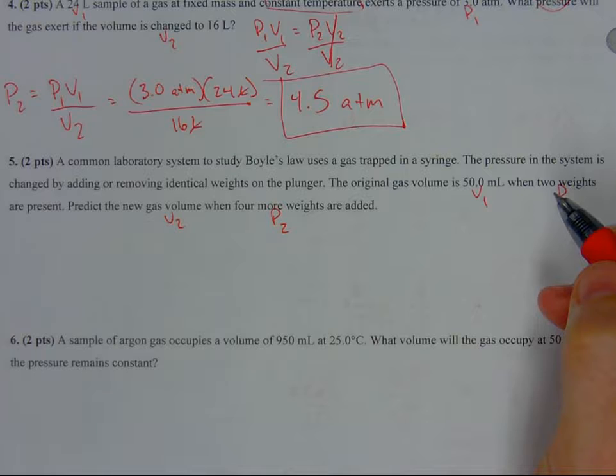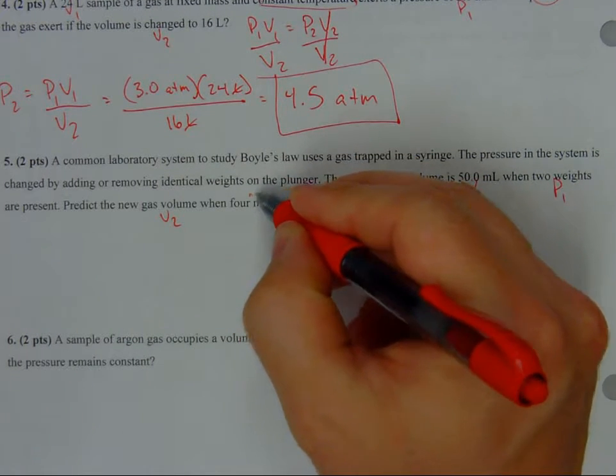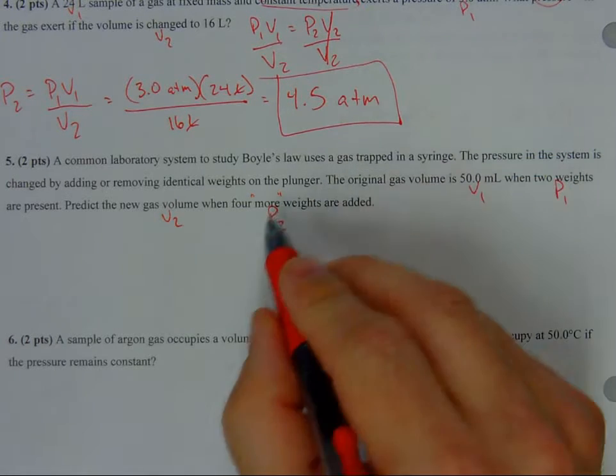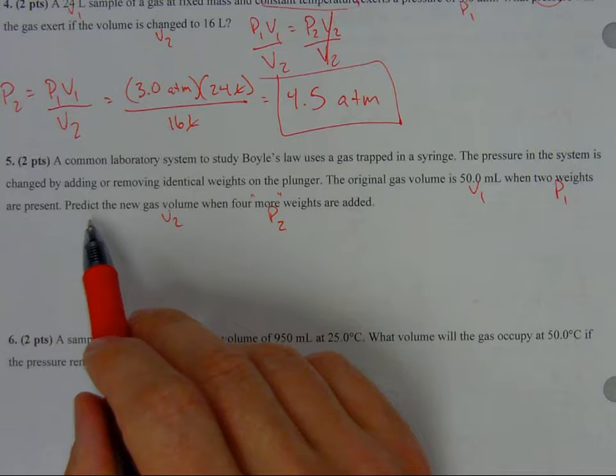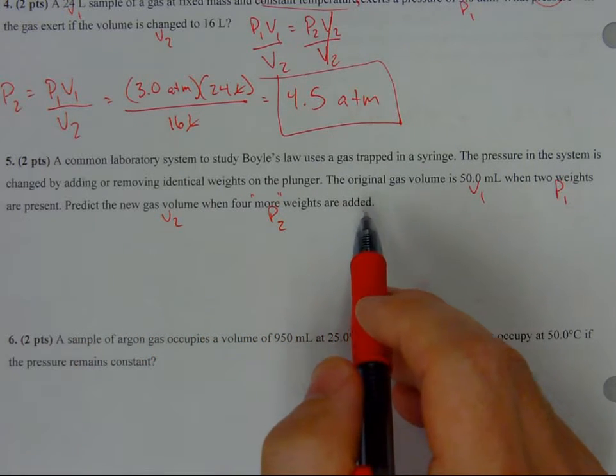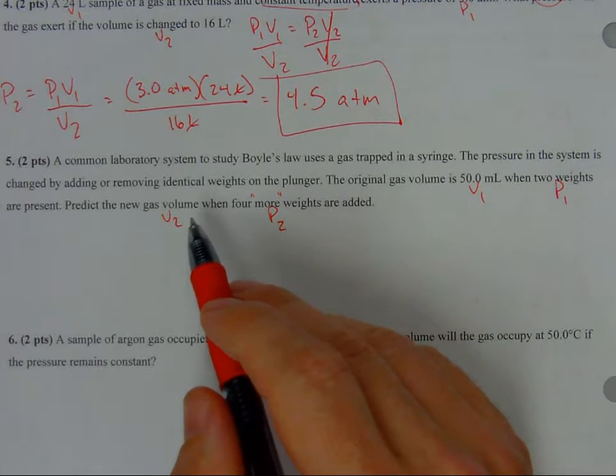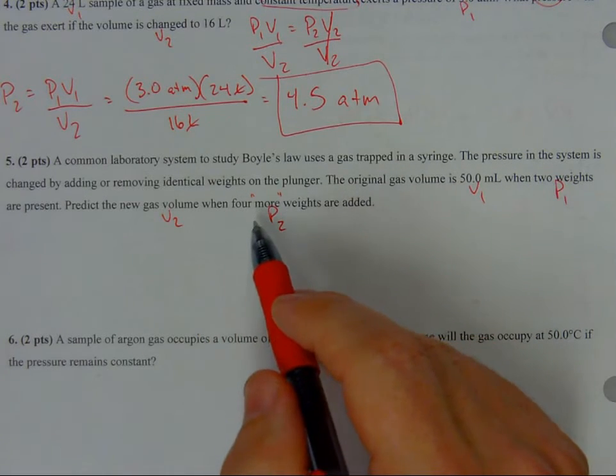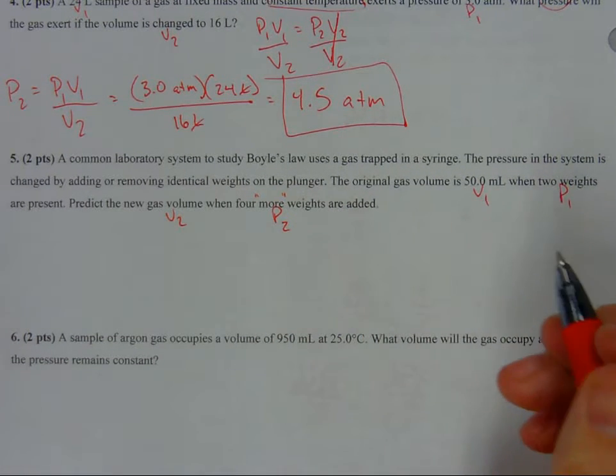Let's see, four more weights. I've helped students with this problem before, and I didn't read this right. I thought it said predict the new gas volume when four weights are added, meaning you're going from two weights to four weights total. But this is actually four MORE weights, so it's actually six weights total.